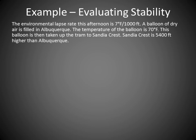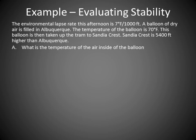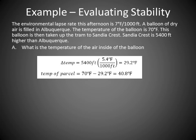Here's a stability question. The environmental lapse rate this afternoon is 7°F per thousand feet in Albuquerque. A balloon of dry air is filled at 70°F and taken up to Sandia Crest, which is 5,400 feet higher. First question: what is the temperature of the air inside the balloon at the crest? Using the dry adiabatic lapse rate, the change in temperature is calculated and subtracted from 70°F, giving 40.8°F at the top of Sandia Crest.